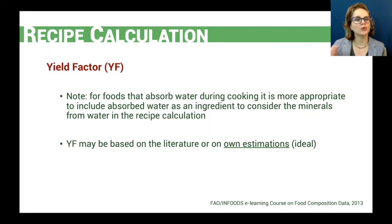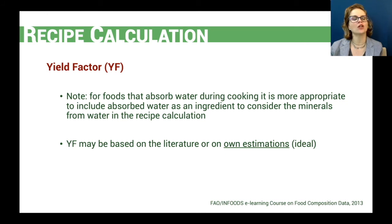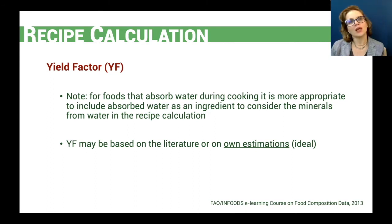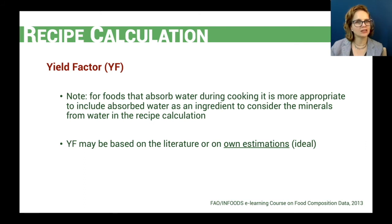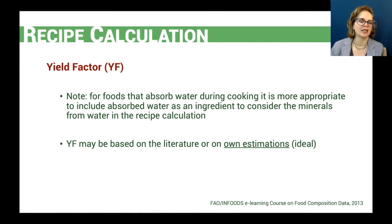An important note regarding water absorbed during cooking: for this type of food, it is more appropriate to include the amount of water absorbed as an ingredient in our calculations, so we can account for the minerals from water. Yield factors can be found in the literature, especially for single ingredient recipes, or we can use our own estimations. For mixed dishes, using our own estimations is the ideal method, to ensure the ingredients and preparation methods truly correspond to the yield factor applied.